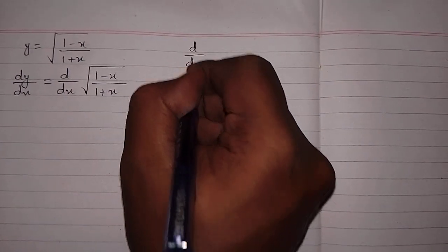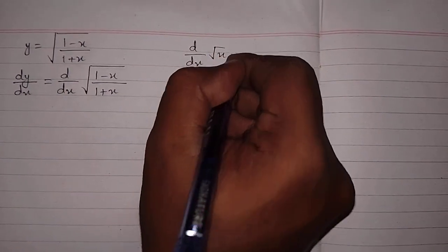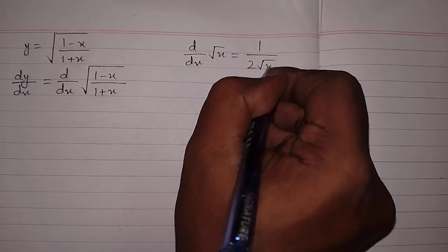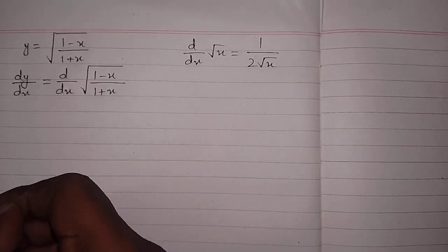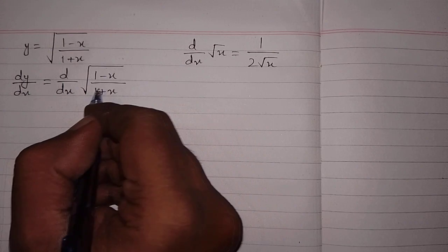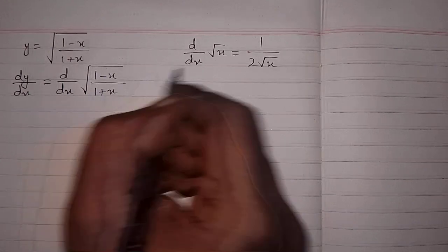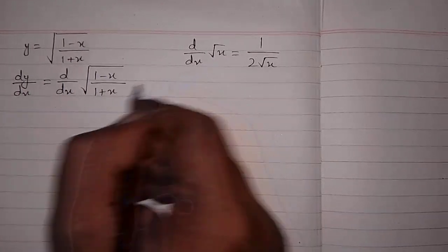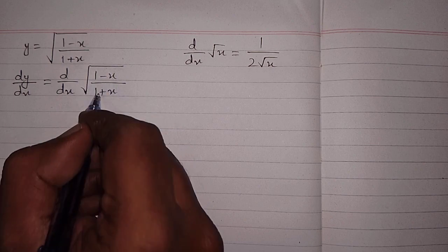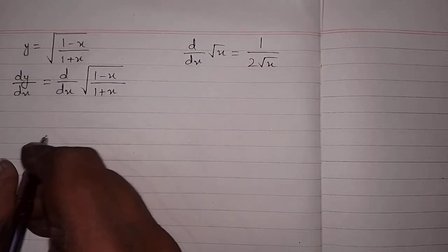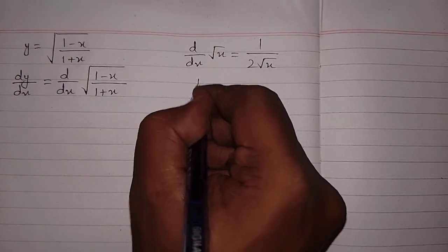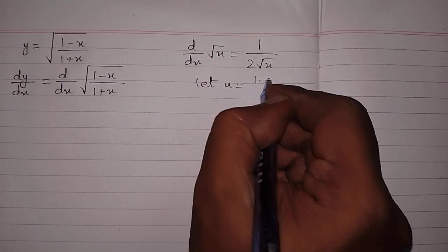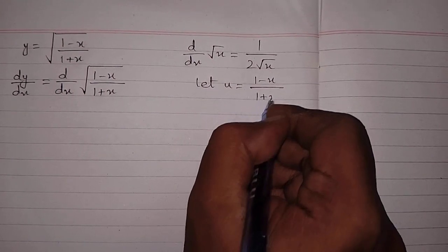We know that the derivative of √x is equal to 1/(2√x). But here we cannot apply this formula directly because this variable and this variable must be the same. We have (1 - x)/(1 + x) in place of x, so let u = (1 - x)/(1 + x).